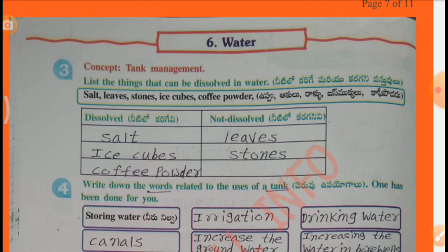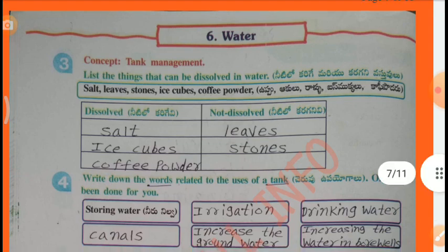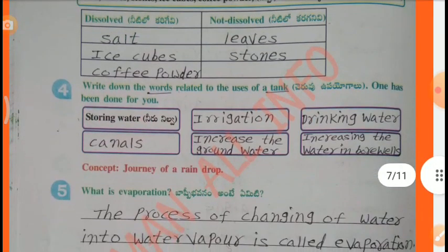Write down the words related to the uses of a tank (one has been done for you — Storing water): Irrigation, Drinking water, Canals, Increase the groundwater, Increasing the water in borewells.